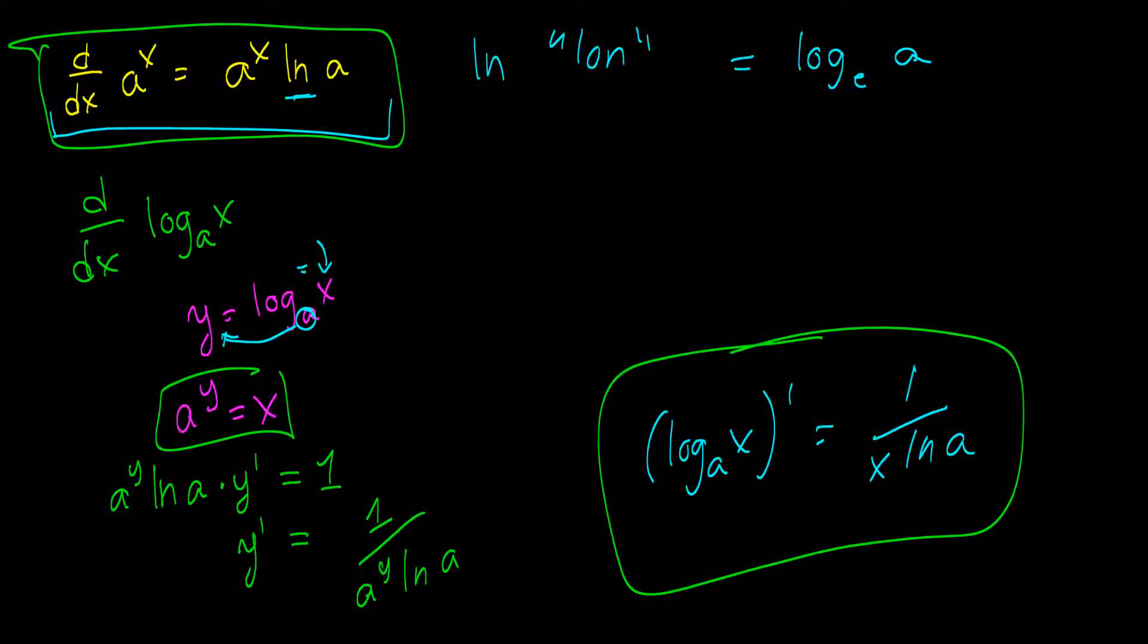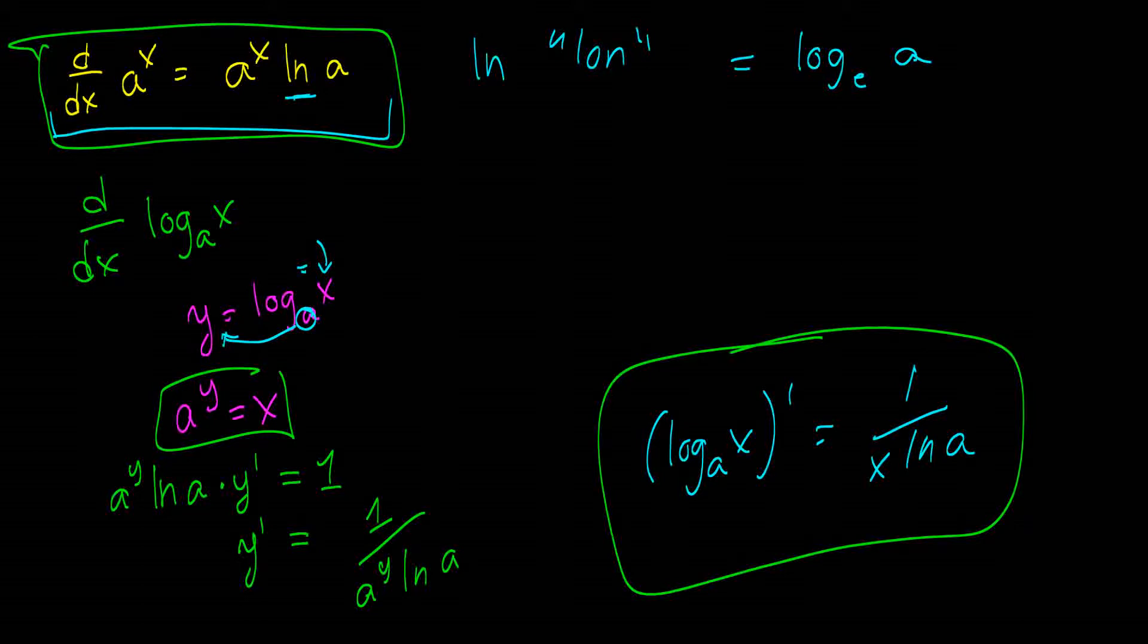Because the natural log, and the derivative of the natural log, which I'm going to get to in a second, is just so much more important. Okay, so I'm going to give you the most important formula here. The derivative with respect to x of the natural log of x is equal to 1 over x. Please prove this to yourself using the definition of the derivative. I am not going to, but this is the most crucial formula for a derivative that you will ever need in calculus. 1 over x. You'll see this all the time.